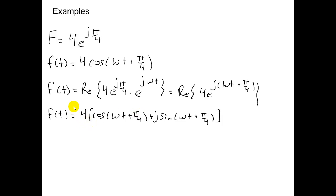And again, we want to take the real part of this. So the imaginary term cancels out. You can see that F of t equals 4 cosine of omega t plus pi over 4.